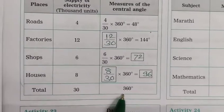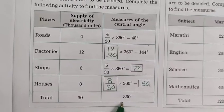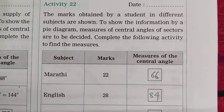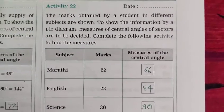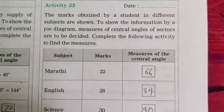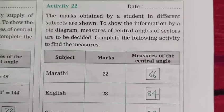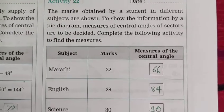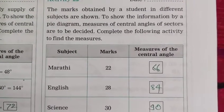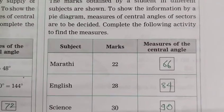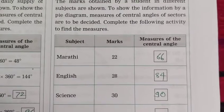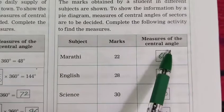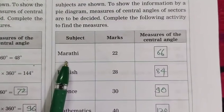Now second activity today, Activity number 22. The marks obtained by a student in different subjects are shown. To show the information by a pie diagram, measures the central angles of sectors are to be decided and complete the following activity.